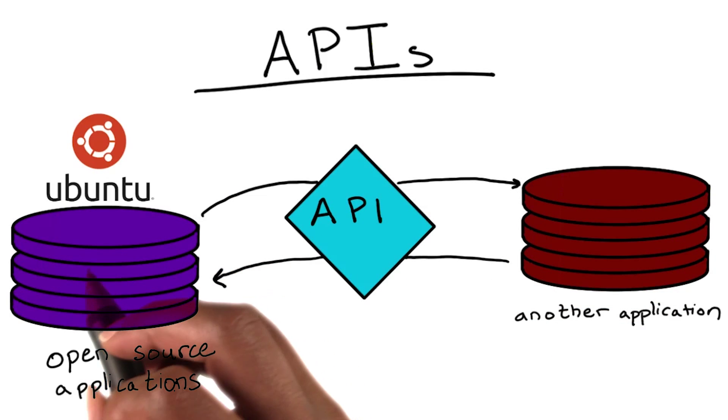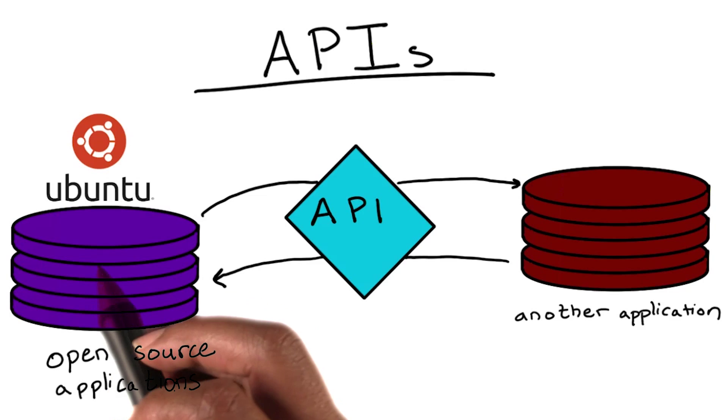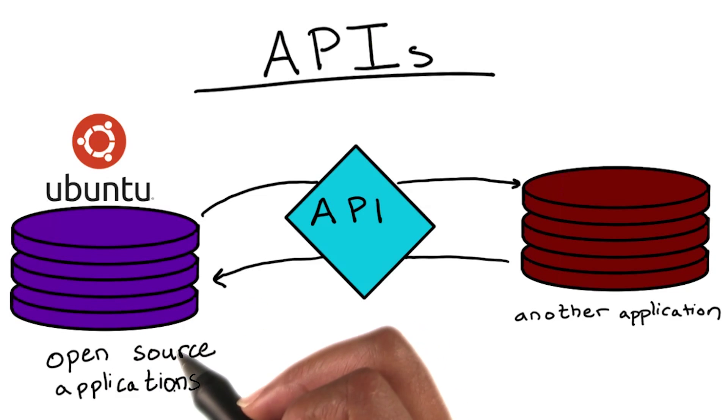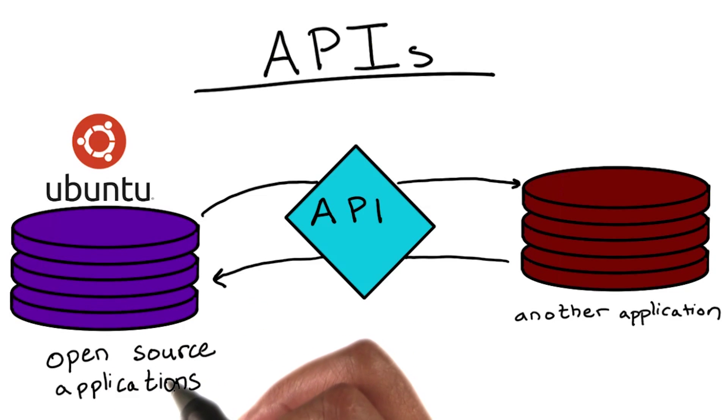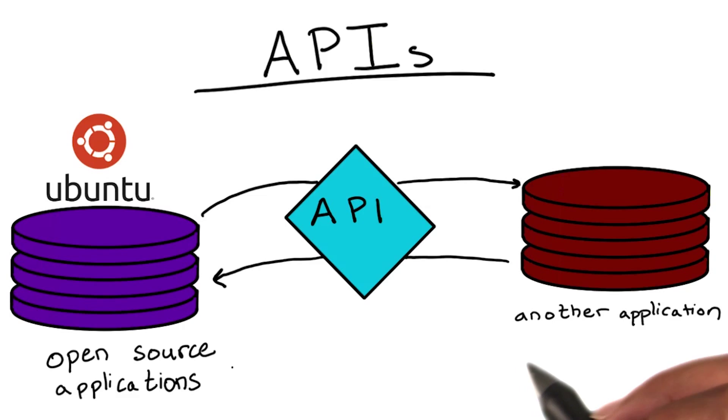Even for open source code projects like the Ubuntu operating system, APIs make easy entry points to code that other developers will most frequently use.